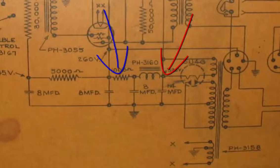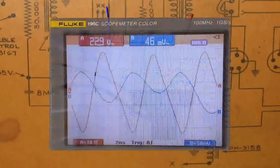So if we move over to the next RC stage, so this is after the 1K, the ripple has been further reduced to 46 millivolts.